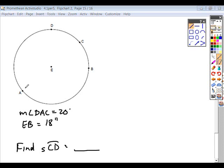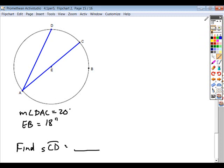If you begin by drawing in what you have, angle DAC, so if we connect D to A and then to C, we get this angle measure of 20 degrees, and then you also have the relationship that EB is given as 18 inches.